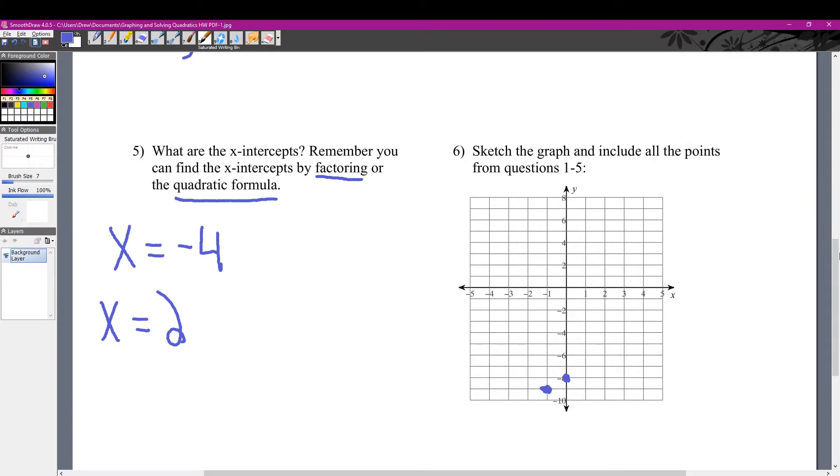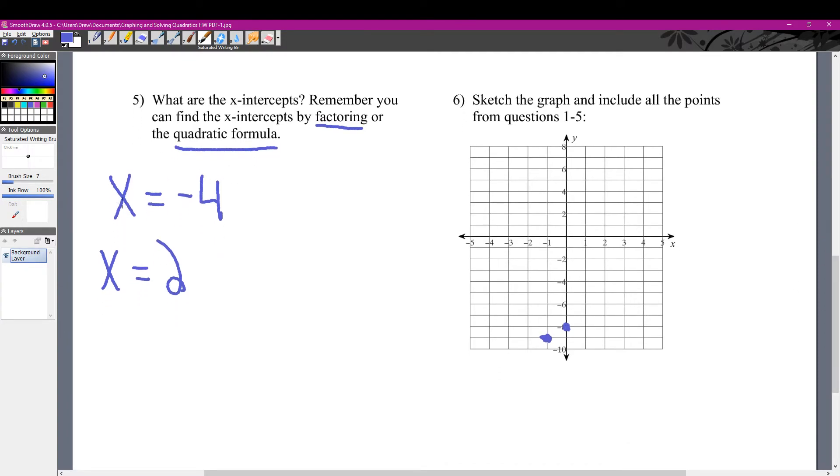We also know that the x-intercepts are at x equals negative 4 and x equals 2. So on the x-axis, go to negative 4 and go to 2.